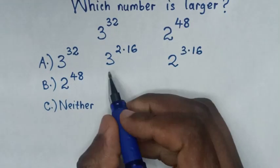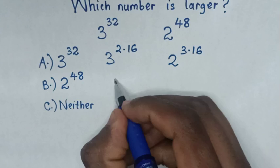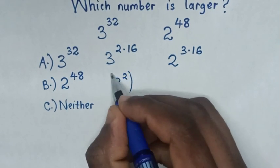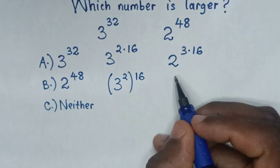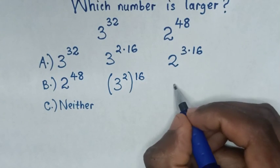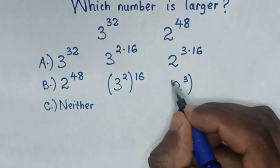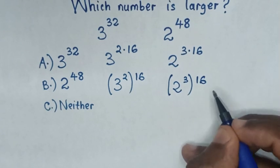Then in next step, it will be 3 power 2 inside the bracket and power 16 outside the bracket. And here it will be 2 power 3 inside the bracket, power 16 outside the bracket.